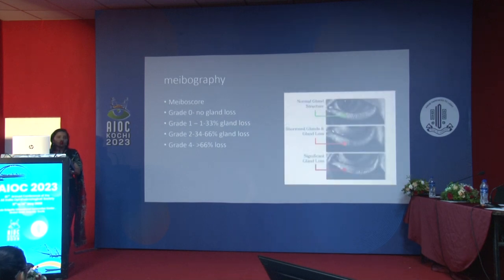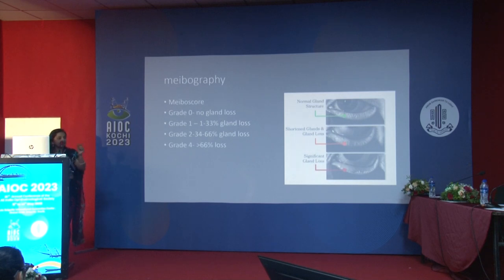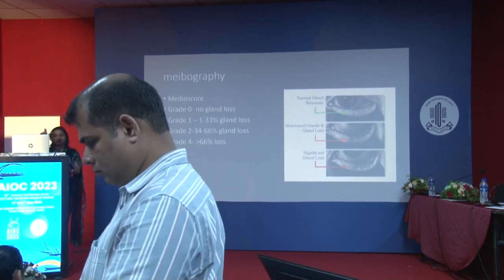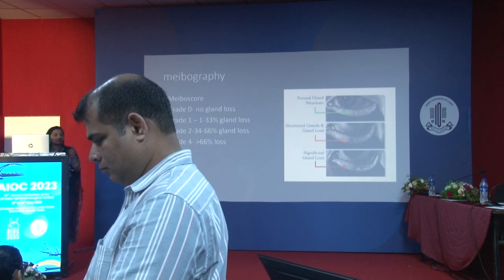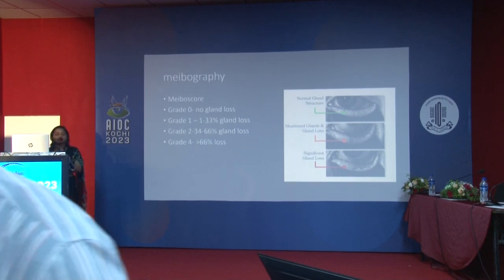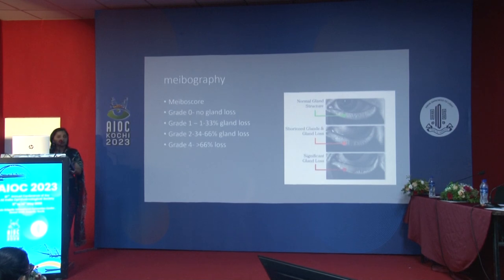Third is meibography. We have dedicated machines, but if we don't have one in our setting, we can use the auto-refractometer, which has infrared light — we evert the lid and see how many glands are present and their structure. Meibography gives us a mebo score: grade zero is no gland loss; grade one is up to 33 percent gland loss; grade two is up to 66 percent. Importantly, we assess both the upper and lower lids.